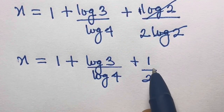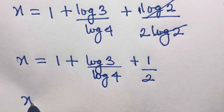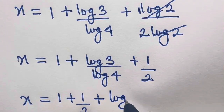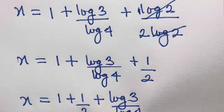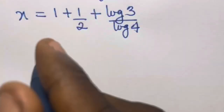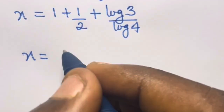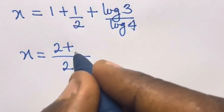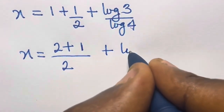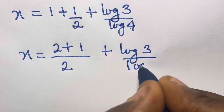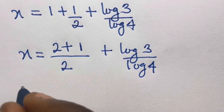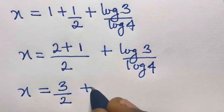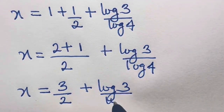We can sum the constant terms together, so x equals 1 plus 1/2 plus log 3 divided by log 4. Finding the common denominator: 1 equals 2/2, so 2/2 plus 1/2 gives 3/2. Therefore x equals 3 divided by 2 plus log 3 divided by log 4.